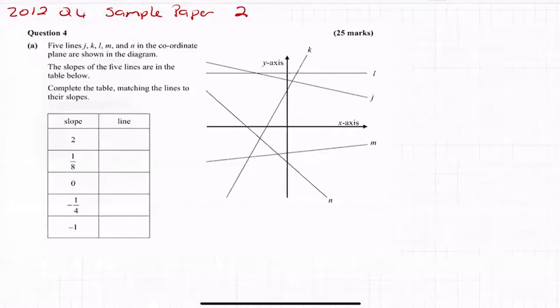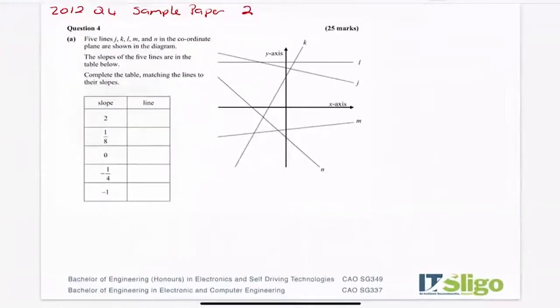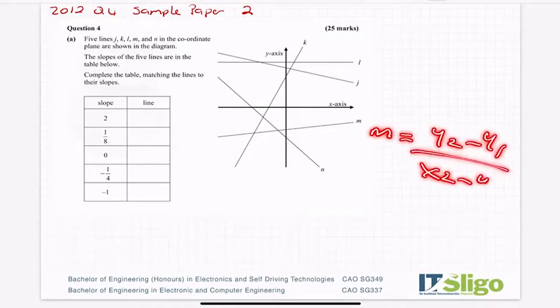Now I could really see how a question like this could flummox someone in that there's no values on the x or y axis. There's no points, so I have no way of using y2 minus y1 over x2 minus x1. I can't use that because they haven't given me points.